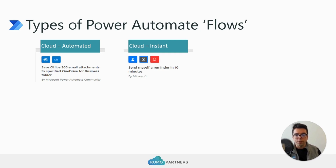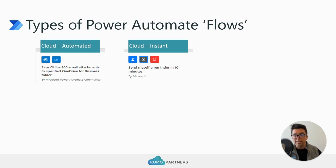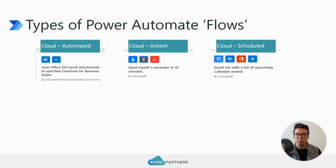We also have Instant Flows, which are more action-based. If you press a button — whether on your phone or online when you run the flow — or you have instantaneous things such as for a selected message from Teams or for a selected email to perform an action, that is an example of an Instant Cloud Flow.